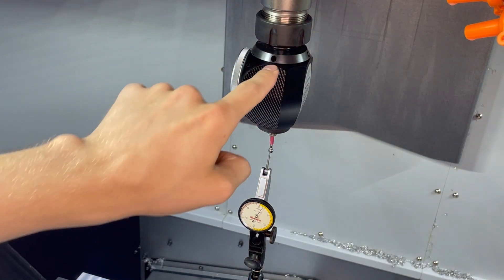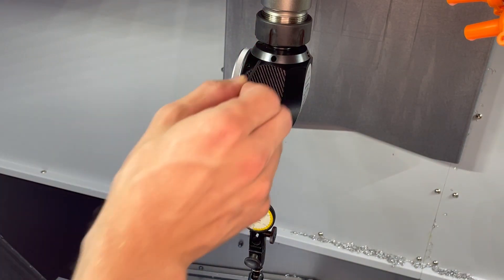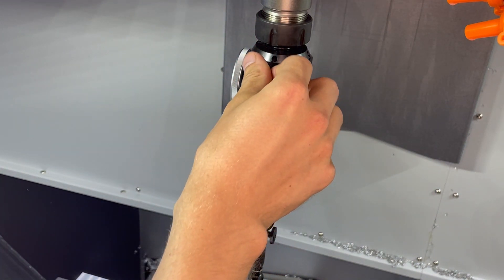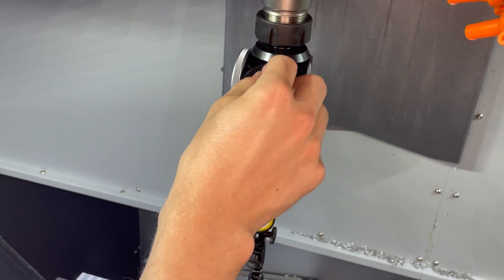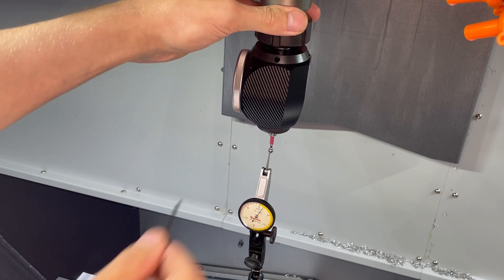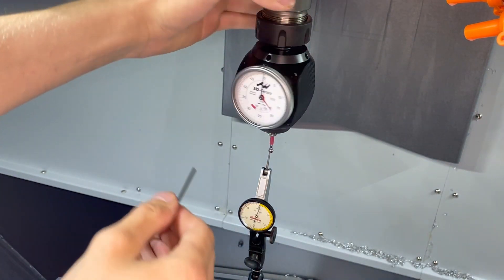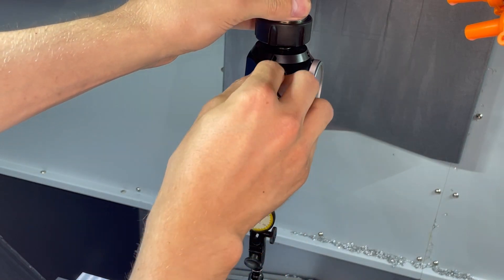These four set screws in here are what determine how centered this ball is. A good place to start is to always find your high spot. So our high spot is right about there, so we know that this side needs to be loosened and this side in the back needs to be tightened.